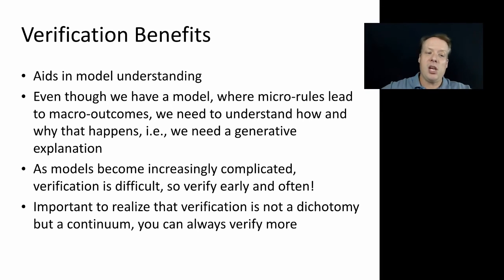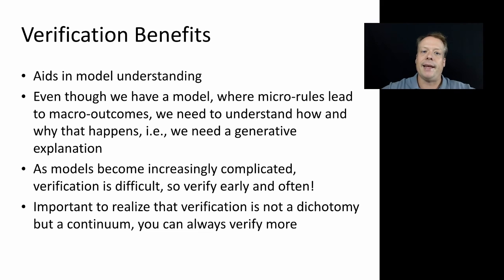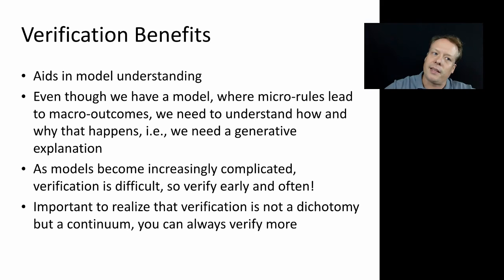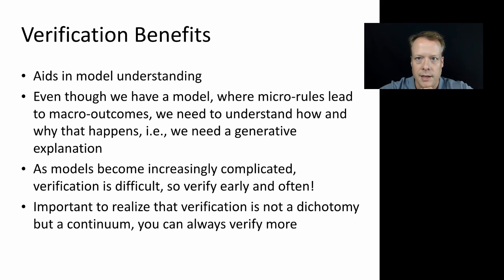The verification process helps us understand those relationships because it helps us understand why the model outcomes we're seeing are generated by what we're getting. And as models become increasingly complicated, verification is very difficult. So it's important to start early in this process to understand those low-level interactions, so that you can build upon that knowledge to make more and more sense out of the larger and larger space of interactions.